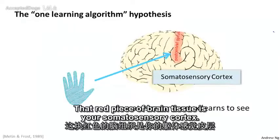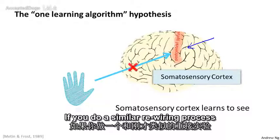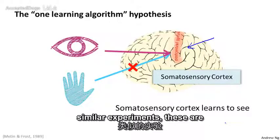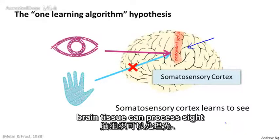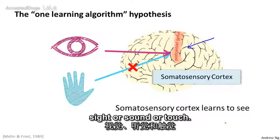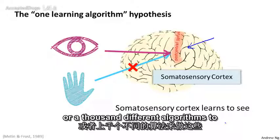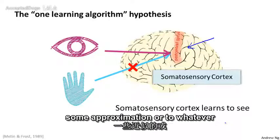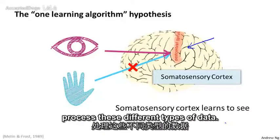Here's another example. That red piece of brain tissue is your somatosensory cortex — that's how you process your sense of touch. If you do a similar rewiring process, the somatosensory cortex will learn to see. These are called neural rewiring experiments, and there's a sense that if the same piece of physical brain tissue can process sight, sound, or touch, then maybe there's one learning algorithm that can process all of these. Instead of needing a thousand different algorithms, maybe we just need to figure out the brain's single learning algorithm.